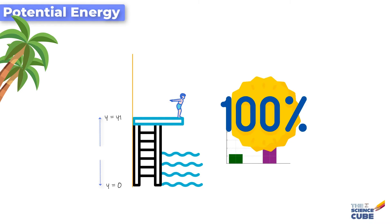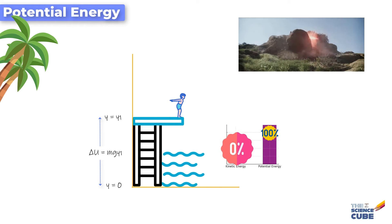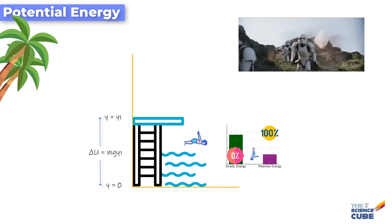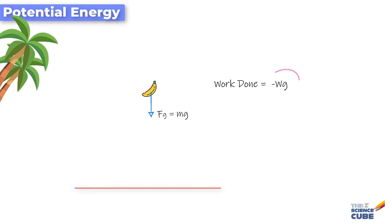Welcome back. In this lesson you will learn how the work done by a force changes the potential energy of an object. If you throw a banana up in the air, we know that the gravitational force acts on it, and like any other force it will do work on it. This work done — let us call it Wg — will be negative, simply because this force is reducing the kinetic energy of the banana as it moves up.